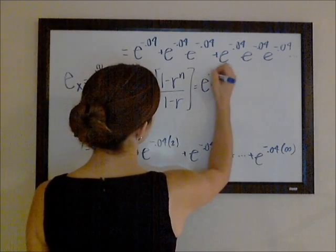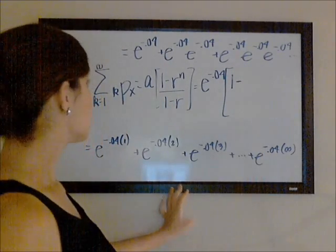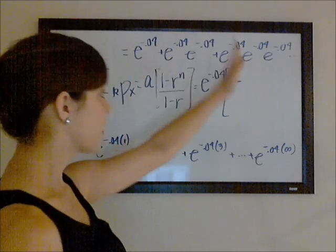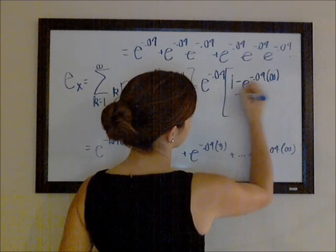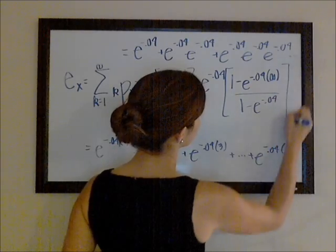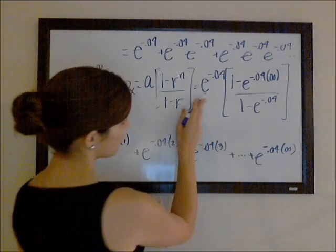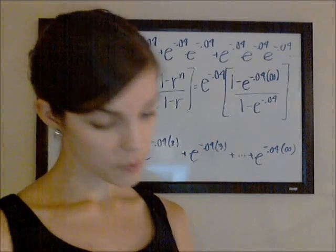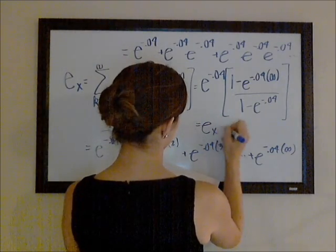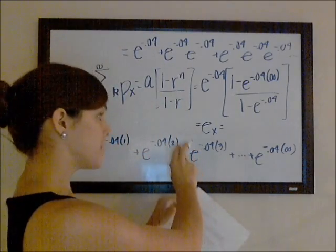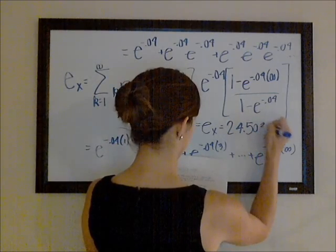So here the first term is e to the negative 0.04. Our ratio is also e to the negative 0.04, it's whatever we're multiplying by each term. So e to the negative 0.04, n is infinity. Of course, e to the negative infinity goes to zero, and we end up with e to the negative 0.04 over one minus e to the negative 0.04. And I got, again, this is e_x for our curtate expected future lifetime for our life age x. I got 24.5033.